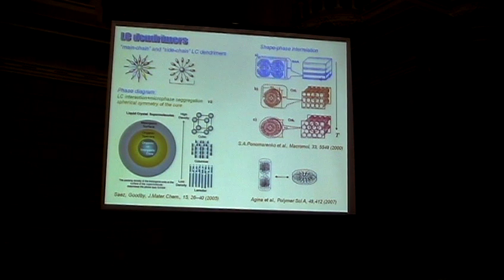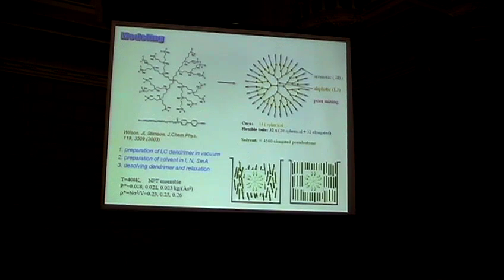So we change from the prolate shape to oblate shape like this one. And we would like to address in our simulations how the environment is affecting the shape of the liquid crystalline dendrons.